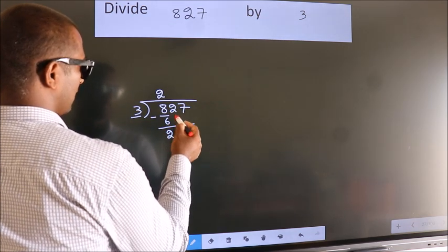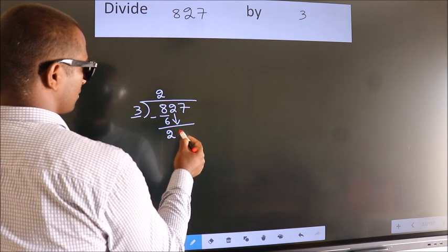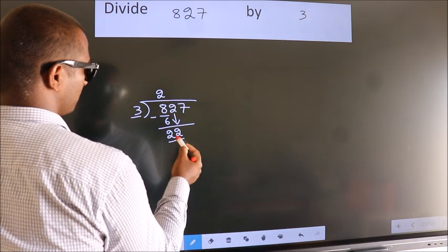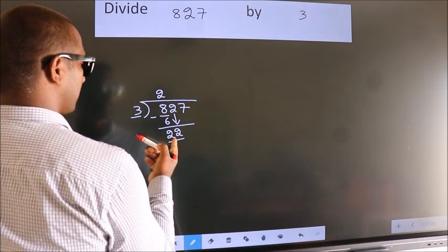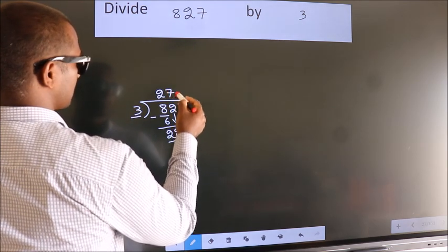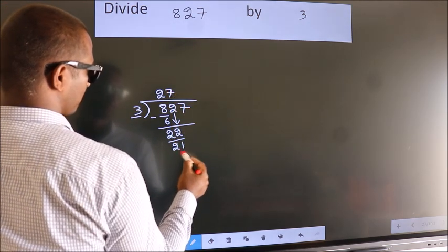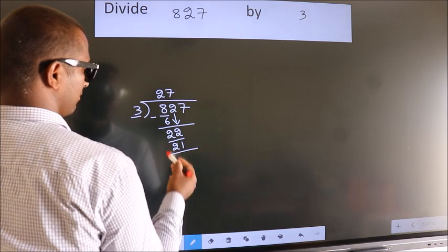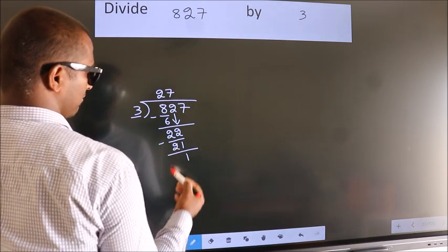After this, bring down the beside number. So 2 down. So 22. A number close to 22 in 3 table is 3 sevenths, 21. Now we subtract. We get 1.